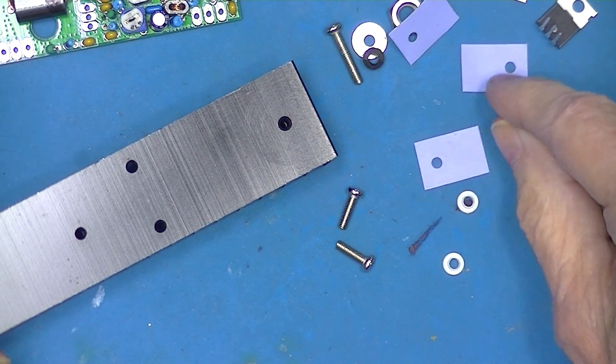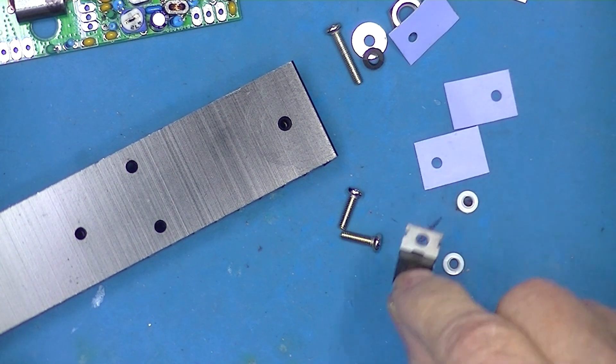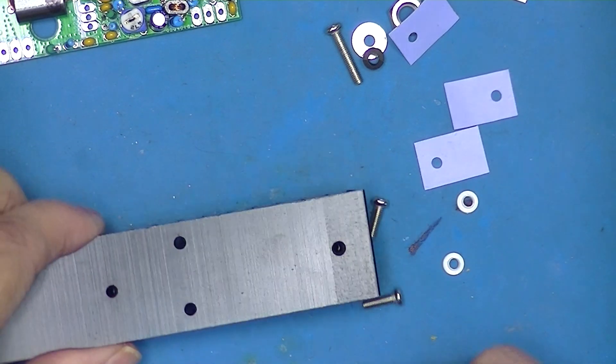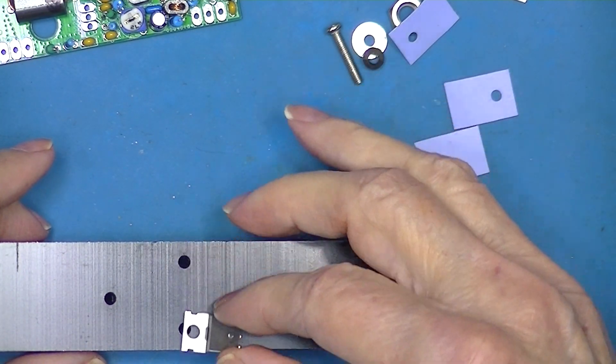That leaves two silicone pads, two insulating washers, two screws for these devices. They'll end up mounting to the heat sink here and here.